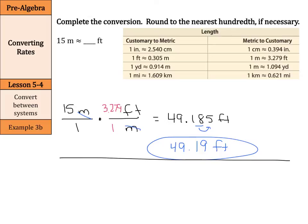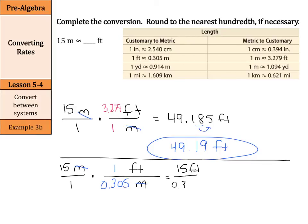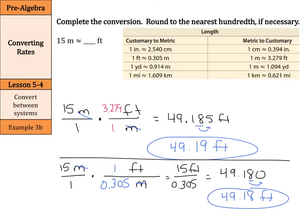Let me show you just real quick one more time using the other fact. We still have feet over meters, but here 1 foot is 0.305 meters. So you set it up as 1 foot and divide by 0.305 meters — the meters cancel out — and we're left with 15 feet over 0.305. When you divide 15 by 0.305, you end up with 49.180 feet. Rounding to the nearest hundredth gives 49.18 feet, slightly different from 49.19 feet. As long as you're showing your work and using the correct conversion factors, both answers are acceptable.